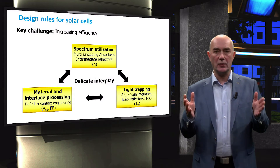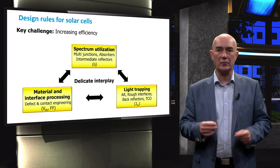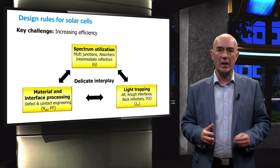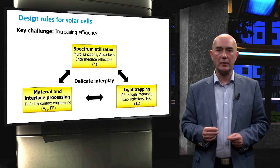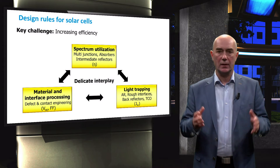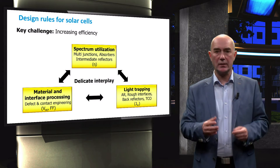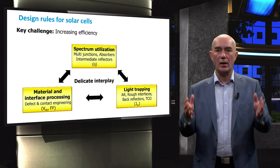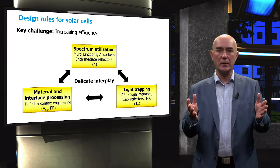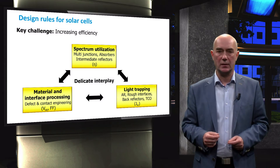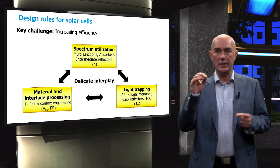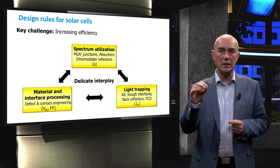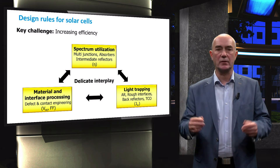The recombination processes in the bulk of materials and at their interfaces decrease the amount of photo-generated charge carriers. Defects and contacts that result in series and shunt resistances also lower performance of solar cells. Therefore, defect elimination is one of the most important areas in solar cell engineering.